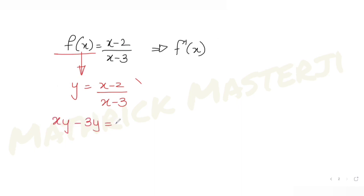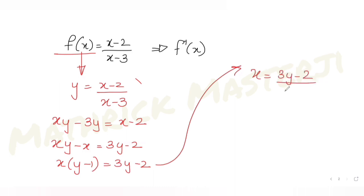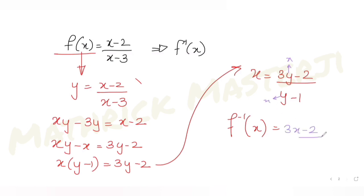Cross-multiplying gives xy minus 3y equals x minus 2. Taking x terms together: xy minus x equals 3y minus 2, so x(y minus 1) equals 3y minus 2, giving x equals (3y minus 2) divided by (y minus 1). Resubstituting y as x, we get f inverse of x equals (3x minus 2) divided by (x minus 1).